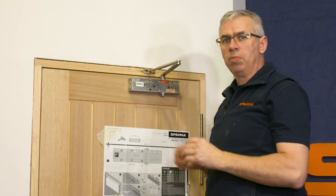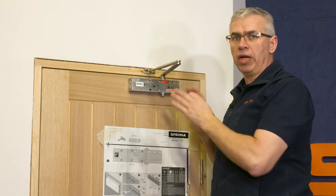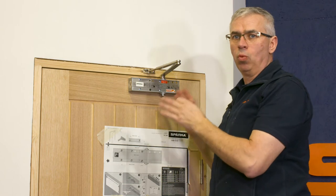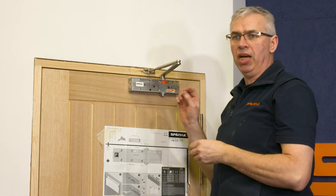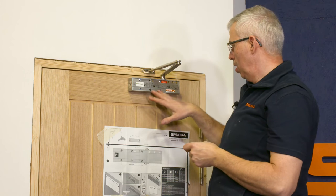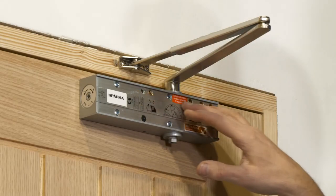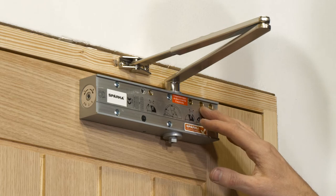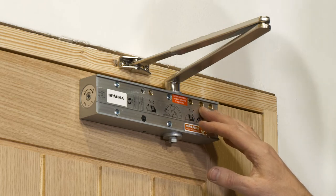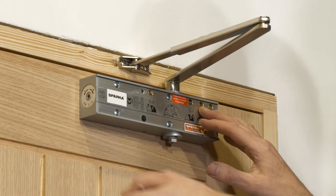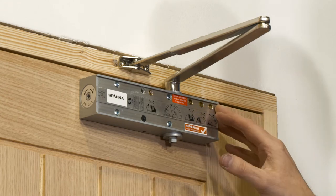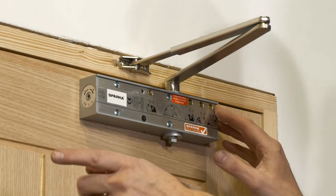Now the door closer should be ready to work. Straight from the factory settings, it'll work and want just minor adjustments. We have four valves on this door closer. Two are the main ones: the closing valve from 90 degrees open to 15 degrees, and the latch valve which is from 15 degrees to closed.